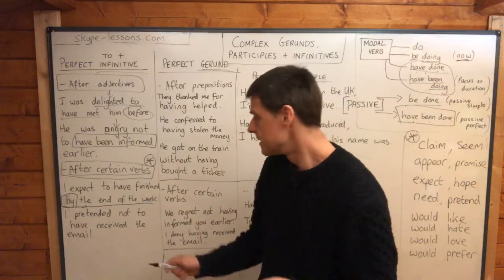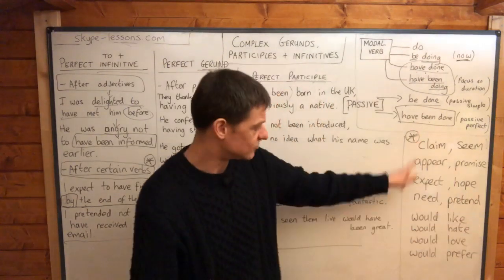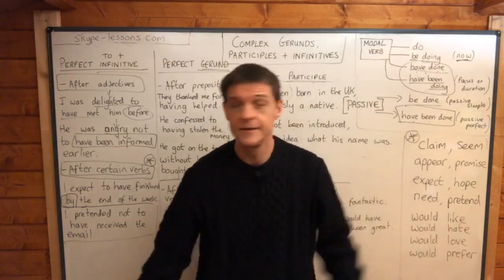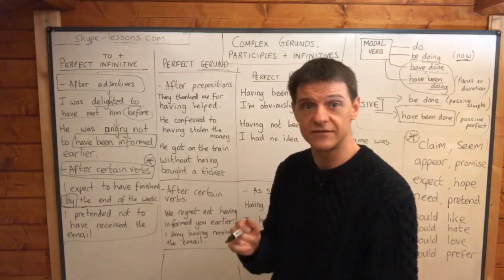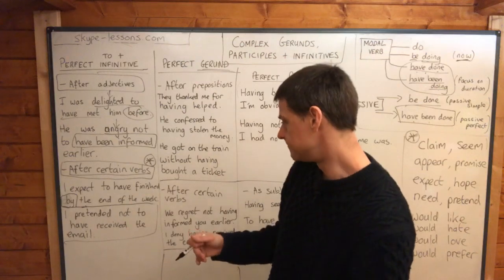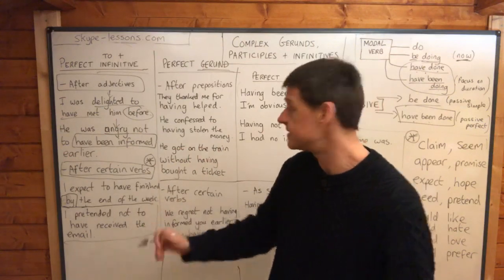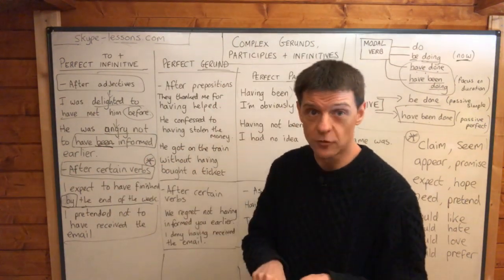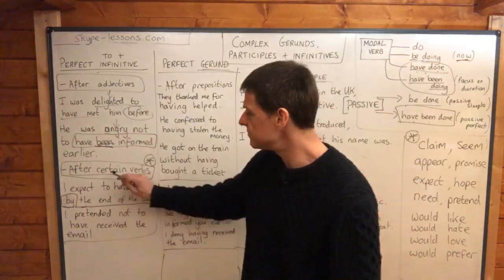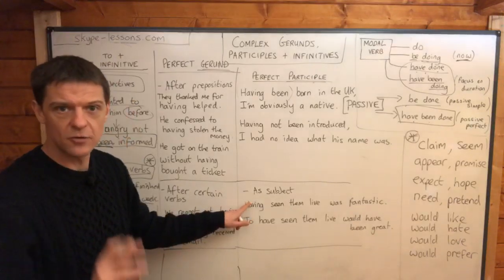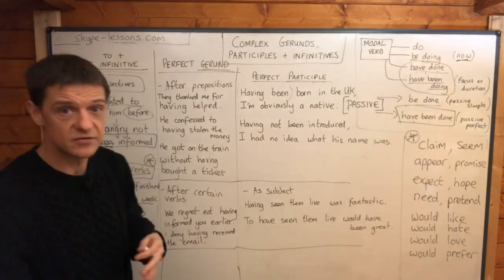All of those work very well with 'by' and a time expression — that's something to remember. 'I pretended not to have received the email' — pretend is one of our verbs. 'I pretended not to have been informed' — that's a perfect passive form. So we use perfect to-plus-infinitive after adjectives, after certain verbs, and also as subject — but I want to talk about that at the end, because both gerund and to-plus-infinitive can be used as subject.